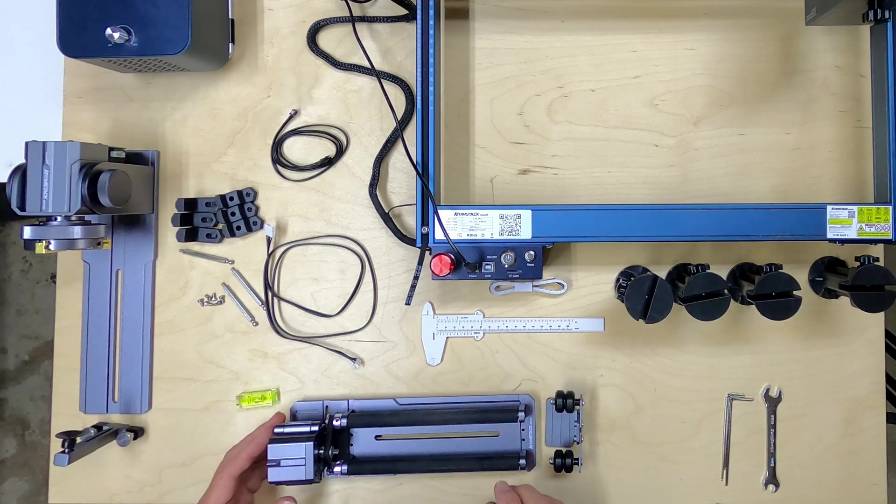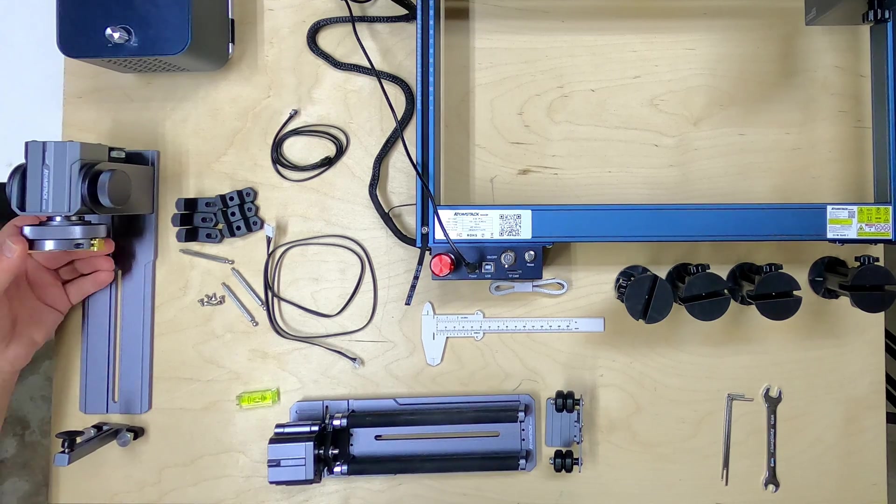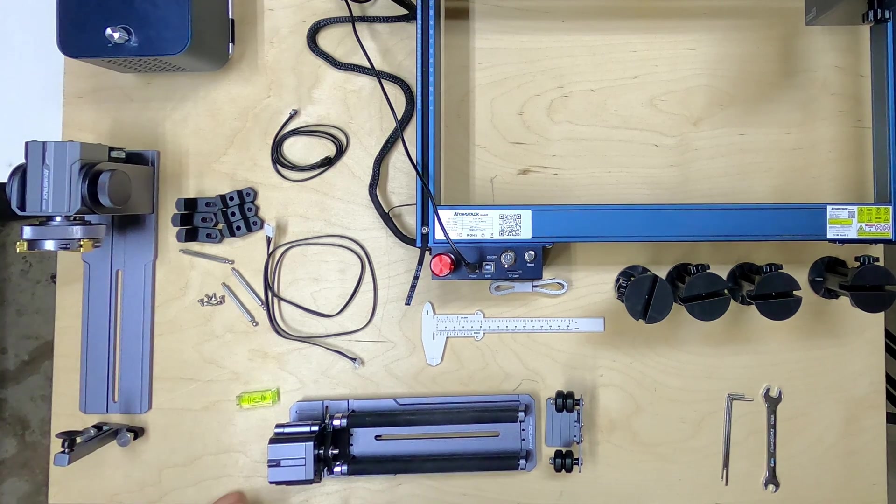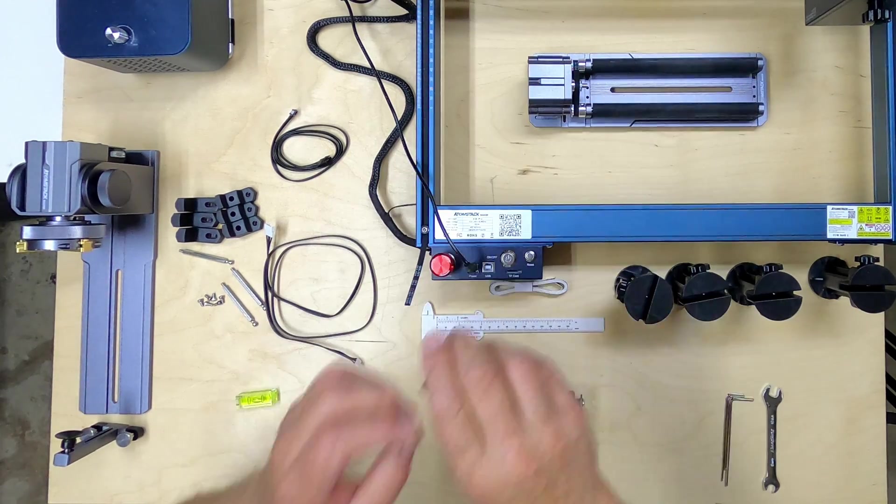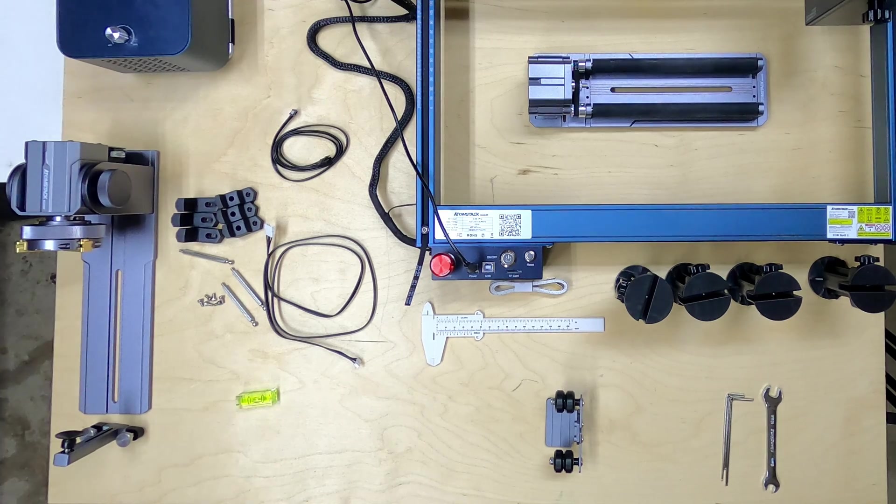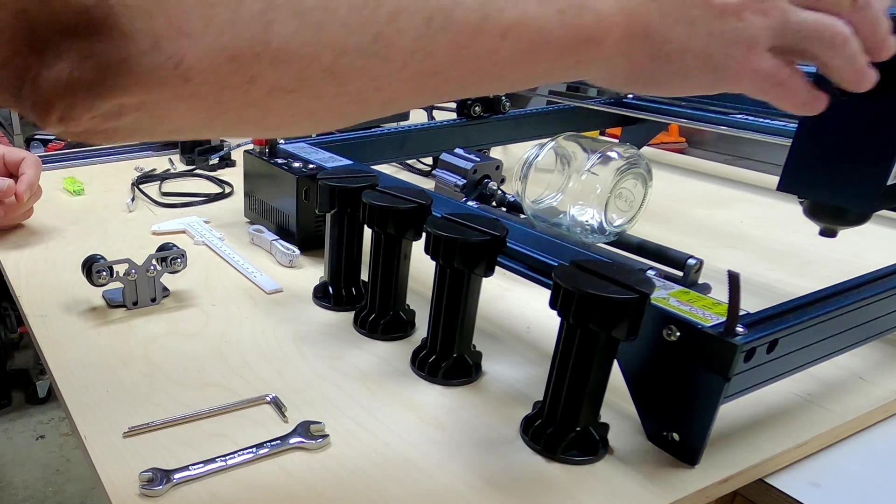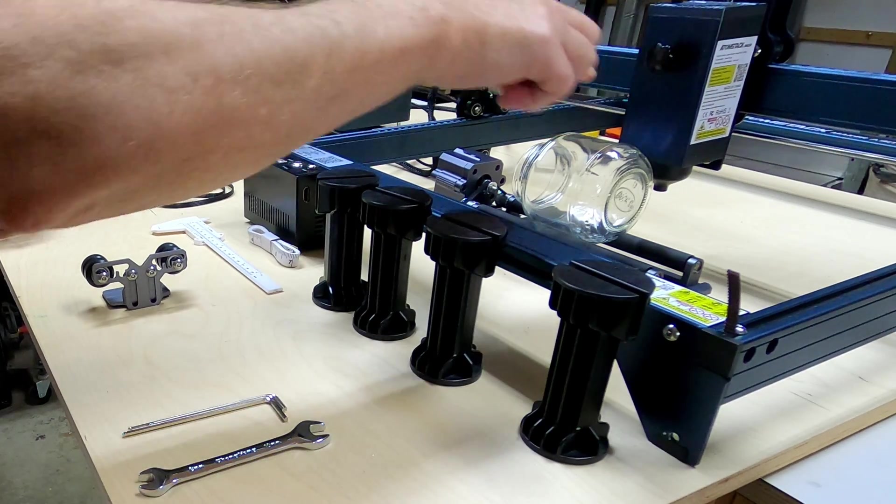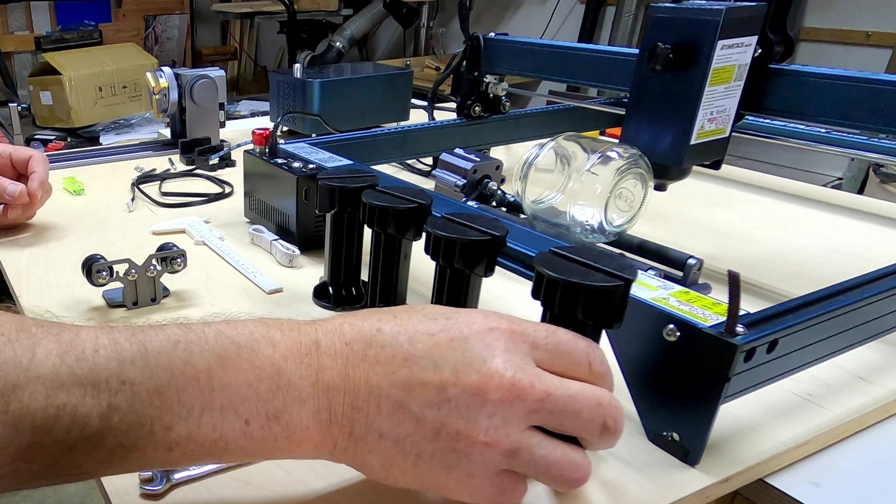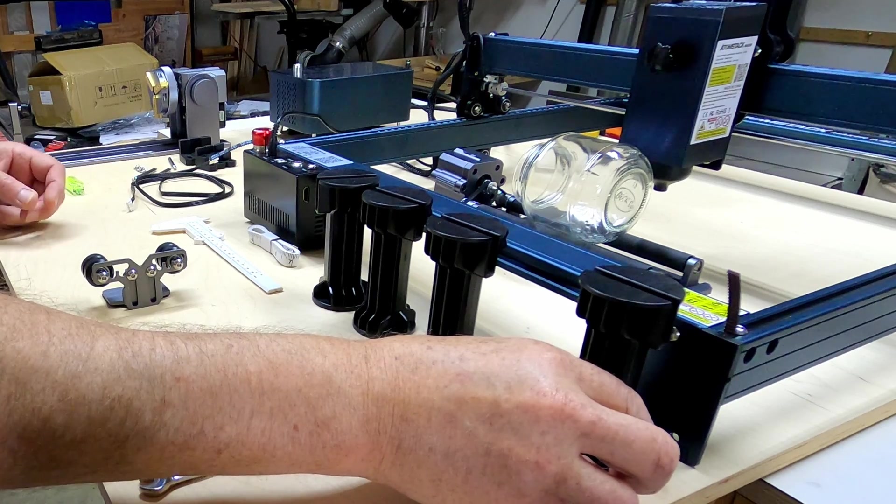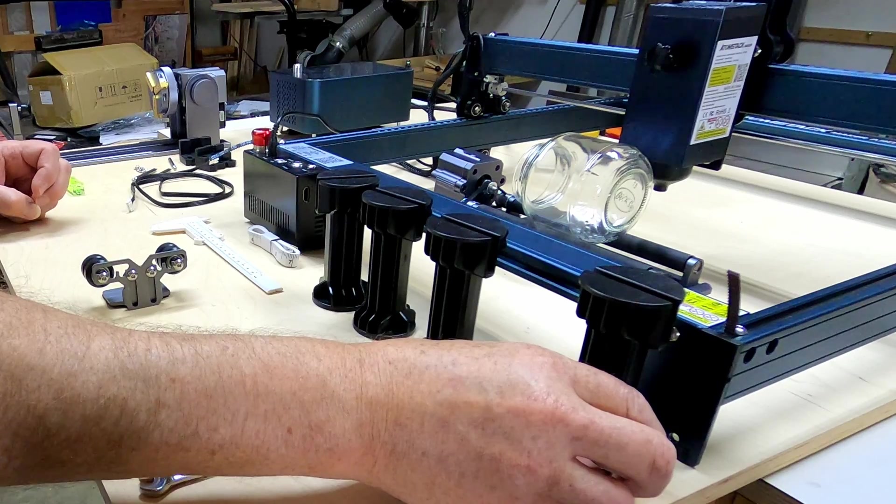This includes both the rotary roller and the chuck assembly. Now the first thing to notice is that if I put this roller inside here and put this small jar on here that I want to engrave, obviously it's too high for this. So they have included four of what they call heightened feet, and these are just to raise this up high enough that I can engrave on something on the roller or the chuck assembly.